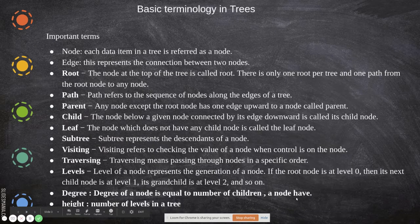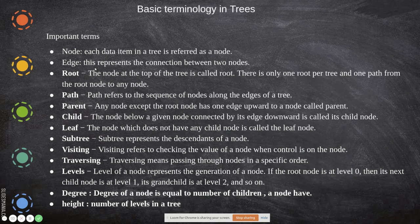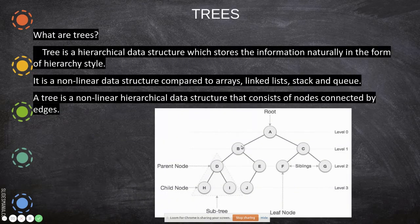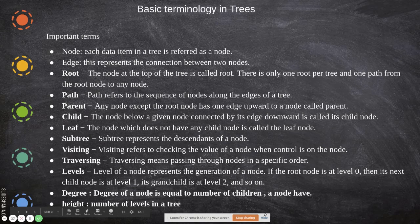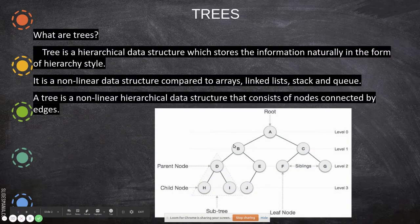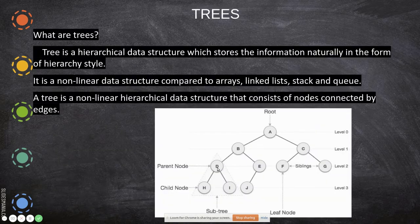Each data item in a tree is referred to as a node. An edge represents the connection between two nodes. The root is the node at the top of the tree. Path refers to the sequence of nodes along the edges of a tree — for example, to go to J you move from A to B, B to E, E to J. A path will be unique for a particular node. A parent is the node any node except root has one edge upward to.